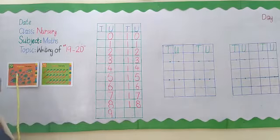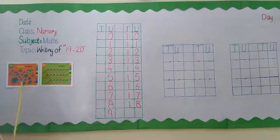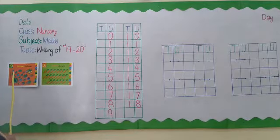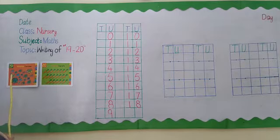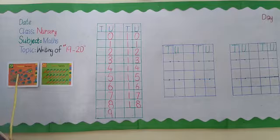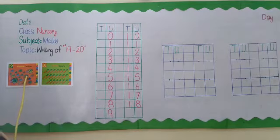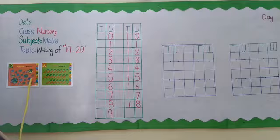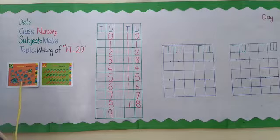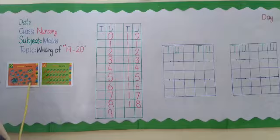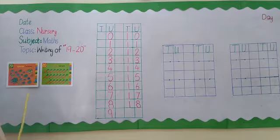Very good. Next number is 19. Let's count. 19 turtles. Very good.